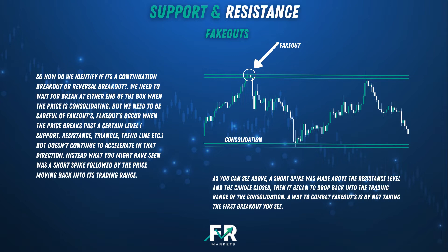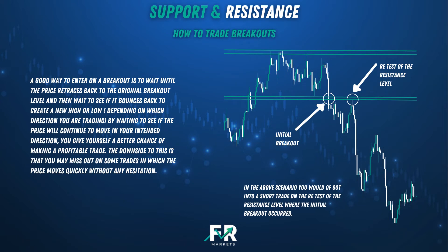A way to combat fakeouts is by not taking the first breakout you see. A good way to enter on a breakout is to wait until the price retraces back to the original breakout level and then wait to see if it bounces back to create a new high or low depending on which direction you are trading. By waiting to see if the price will continue to move in your intended direction, you give yourself a better chance of making a profitable trade. The downside is that you may miss some trades where the price moves quickly without hesitation. In the above scenario you would have got into a short trade on the retest of the resistance level where the initial breakout occurred. Short means to sell and long means to buy.